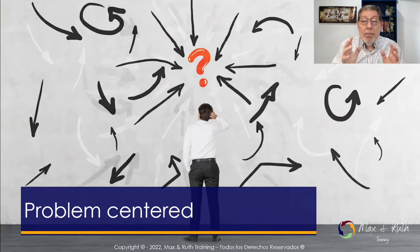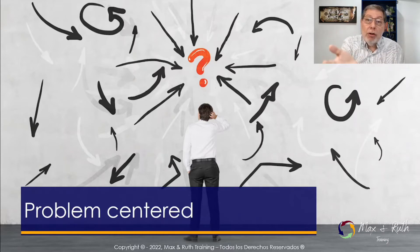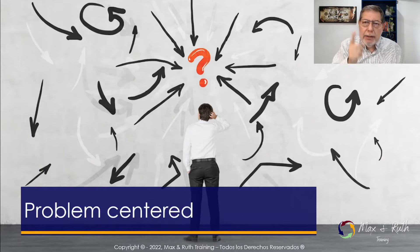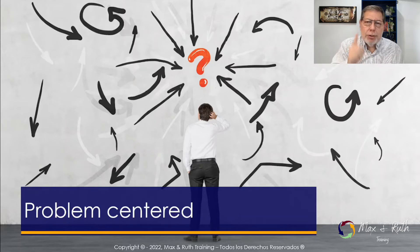Based on those problems, design your course so that it solves a specific problem of your audience. If it does, it will be a very successful course. So that's principle number one: a successful course should be problem-centered.